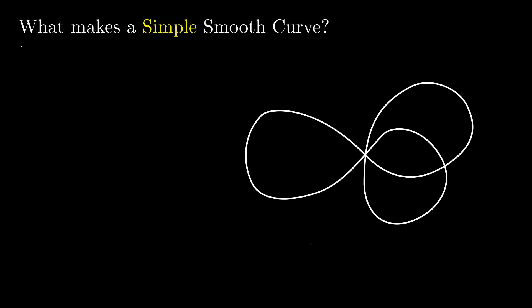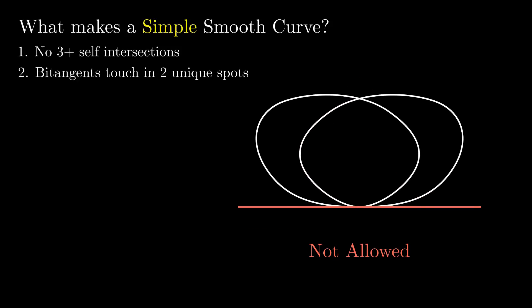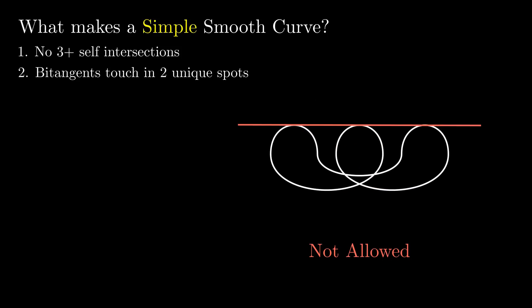The Fabricius-Bjerre theorem is only true for simple, smooth curves, which adds some subtle but important assumptions. The first is that all our double points are just double points, meaning the curve doesn't pass through itself three or more times at the same point. Also, all our bitangents need to be tangent at exactly two places. So this example doesn't work because the tangent points touch the line at the same place. Similarly, we can't have the tangent points touch the same place on the same side of the line.